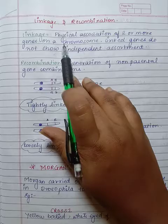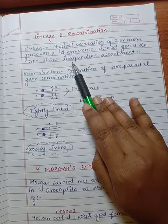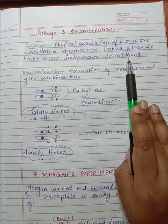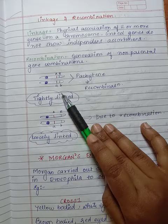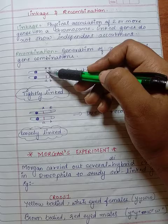Then we come to linkage and recombination. Linkage: physical association of two or more genes on a chromosome. Linked genes do not show independent assortment. Recombination: generation of non-parental gene combinations. Tightly linked genes show low recombination because the genes are close. Loosely linked genes show higher recombination because they are far away.